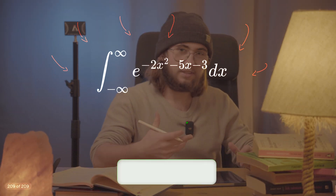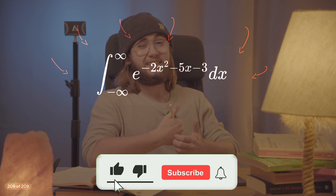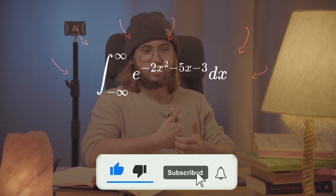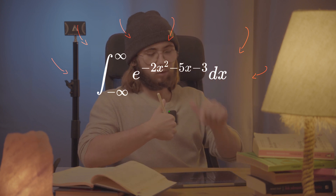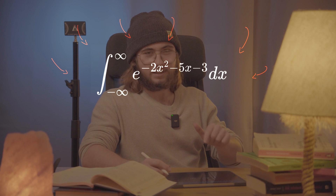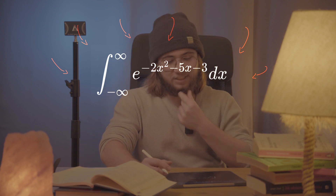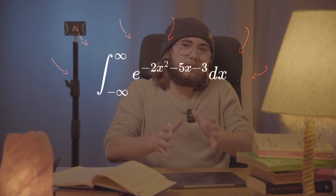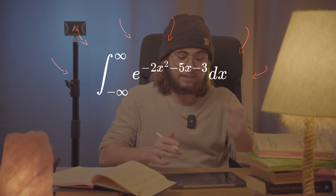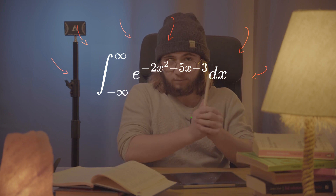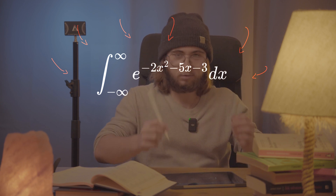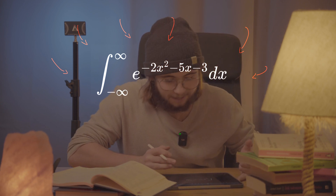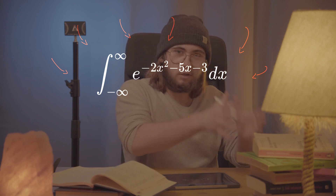Today we are going to be solving an integral from the 2017 MIT Integration Bee — which is funny because this is not even the competition itself, it is literally the qualifier. So that has to be tough. The integral is from negative infinity to infinity of e to the power of negative x squared minus 5x minus 3, dx.